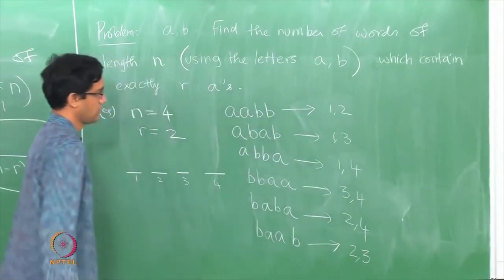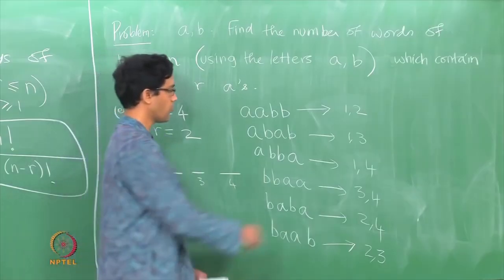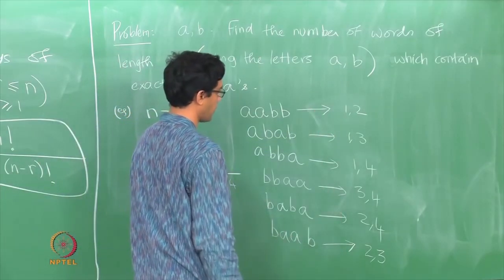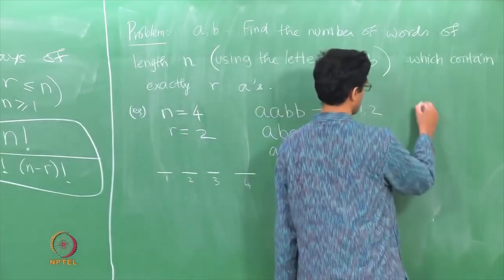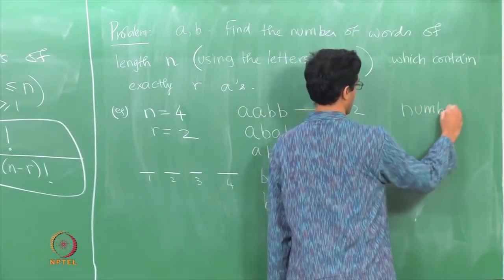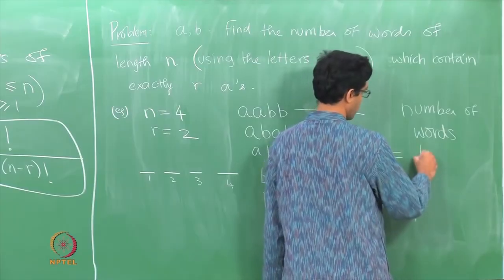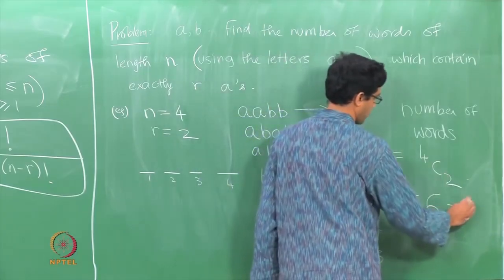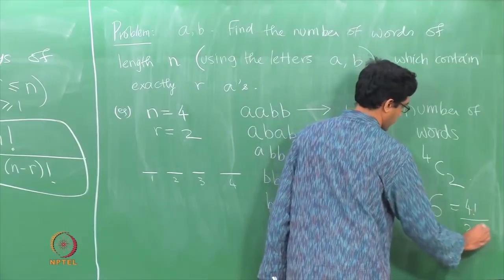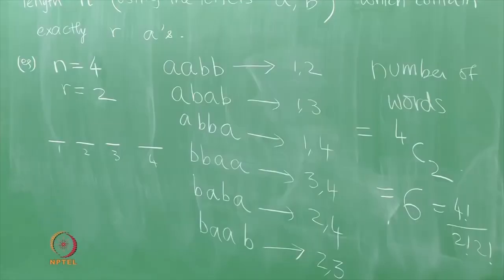So a word of this kind is really the same thing as a choice of 2 positions out of 4. Given the 4 position numbers 1, 2, 3, 4, you choose 2 positions where the A's occur. The number of choices is therefore 4C2, which we know to be 6 — computed as 4! divided by 2! times 2!. This connection between words and combinations occurs in many different places.